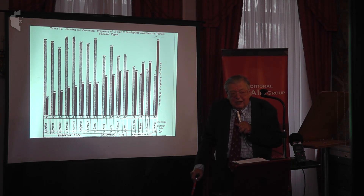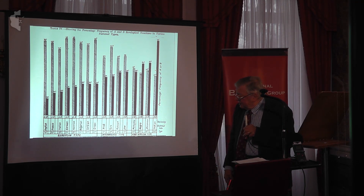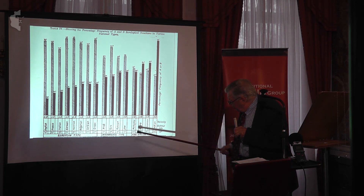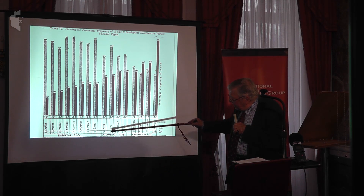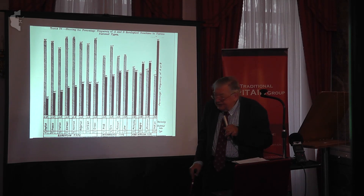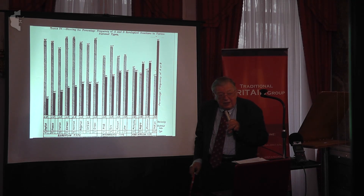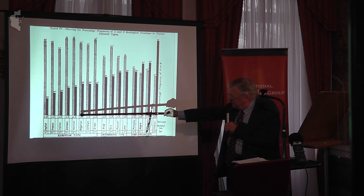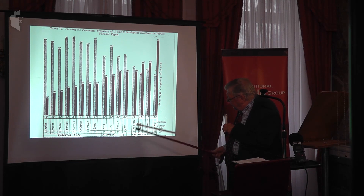Around the time of the First World War, a couple called the Hirschfelds had worked on the ABO types, and they took a group of different populations — English, French, all the way down to Indians, Africans. They were typing A and B, and the frequency of A is the hatched column, the frequency of B is the unhatched column. You can see simply from these data that the frequency of the B's changed very much when you went from English and European populations to populations in other parts of the world.